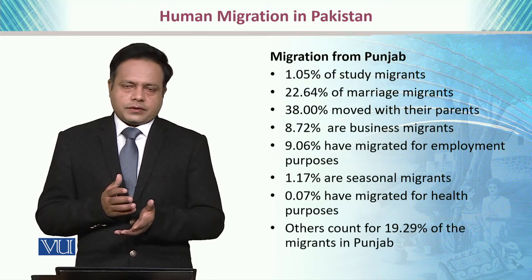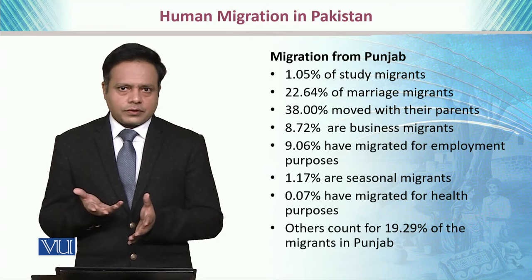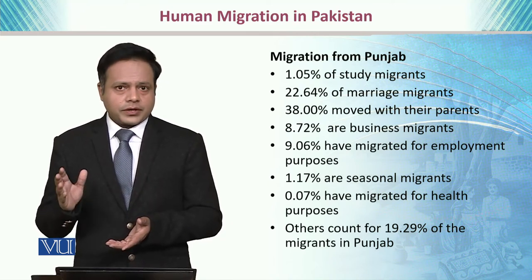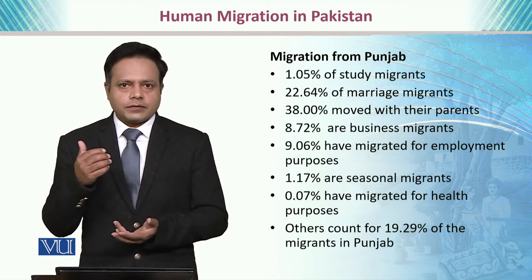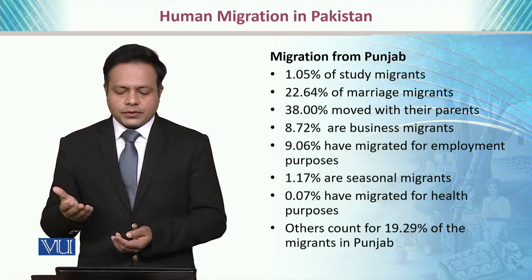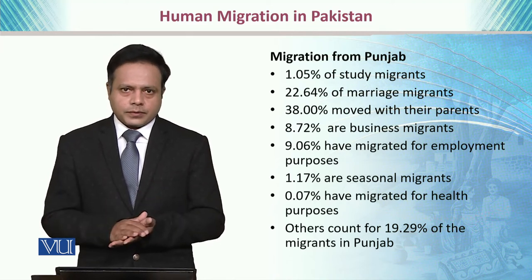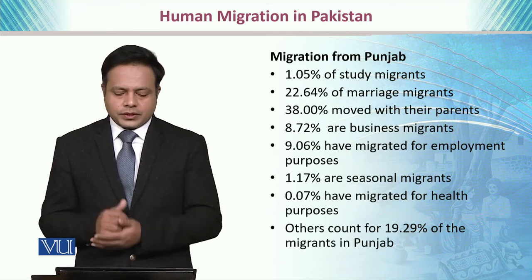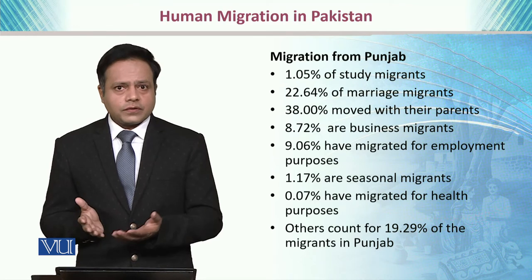If we talk about the different trends of migration across our provinces, in Punjab, almost 1% of people migrate for educational purposes. 22% to 23% migrate because of marriage — usually because females move from their parents' house to the husband's house, so she is also considered a migrant. 38% move with their parents, usually because of employment purposes. 8% are business migrants, and 9% have migrated for employment purposes out of those 38%. 1.17% are considered seasonal migrants in Punjab, whereas 0.07% have migrated for health purposes.